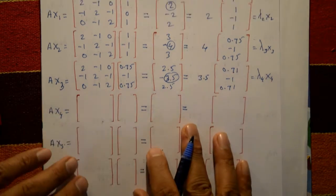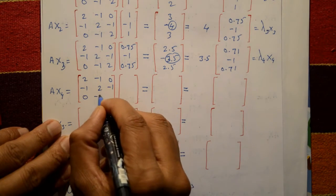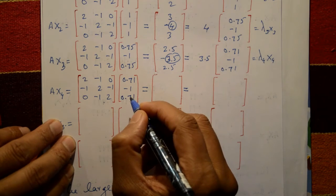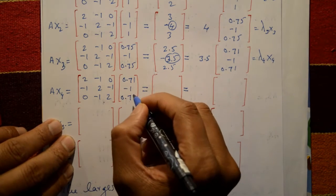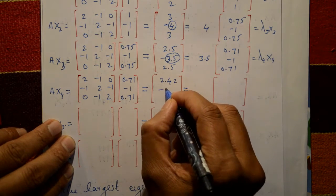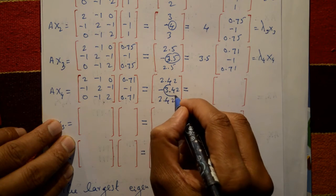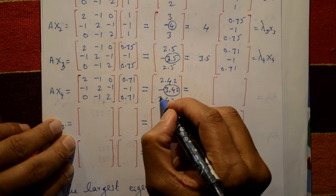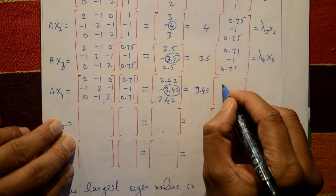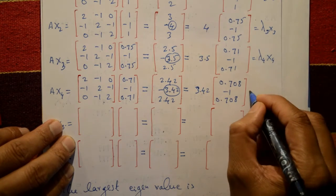Fifth iteration: A × x4 with x4 = [0.71, -1, 0.71]ᵀ. Matrix multiplication gives [2.42, -3.42, 2.42]. Take the numerically largest element 3.42 outside, giving inside [0.708, -1, 0.708]. So λ₅ = 3.42 and x5 = [0.708, -1, 0.708].